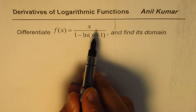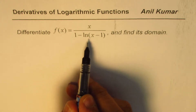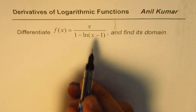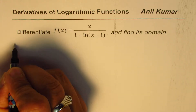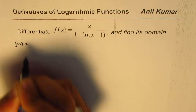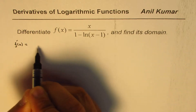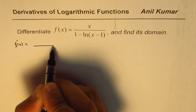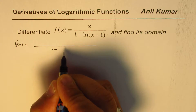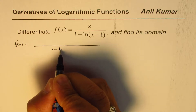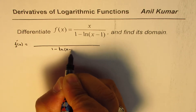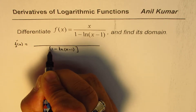In this particular case, we can apply the quotient rule to find the derivative. We can write the derivative of this function as: in the denominator, we have the square of all this, which is (1 minus ln(x minus 1)) whole square.